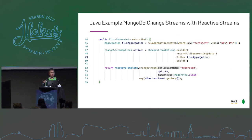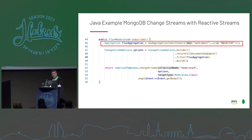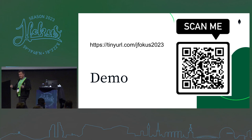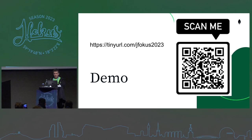Here's a quick look at the code. I'm using the reactive Spring Boot WebFlux framework. This aggregation is the filtering — we're saying we only want events where sentiment equals negative. We then create change stream options and on line 52 we actually create the change stream, telling it to listen to the 'moderated' collection where everything analyzed by Amazon Comprehend is stored. When an event happens we output it back to the client using the Spring WebFlux framework. Please scan the QR code — but don't input anything yet!